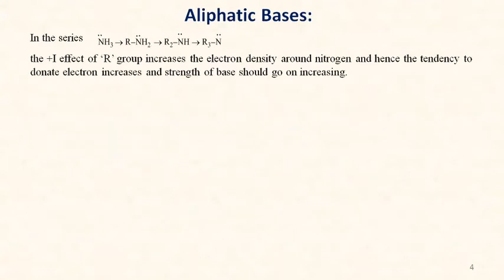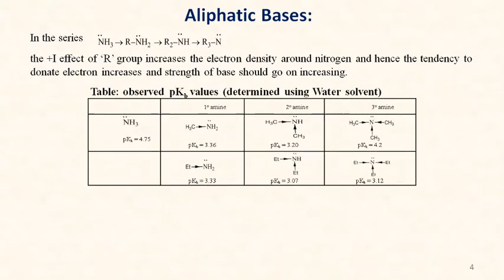For aliphatic bases, in the series ammonia → primary amine → secondary amine → tertiary amine, the +I (electron-donating inductive effect) of alkyl groups increases electron density around nitrogen, so the tendency to donate an electron pair increases and strength of the base should go on increasing. These are the observed pKb values in water solvent from ammonia to methyl amine, dimethyl amine, and trimethyl amine.